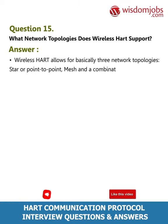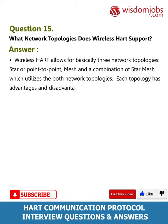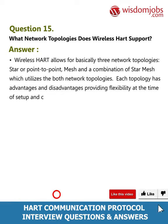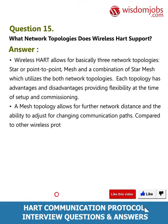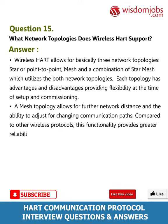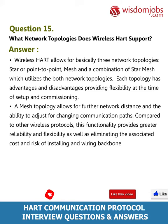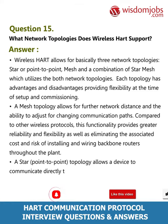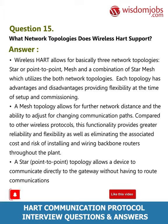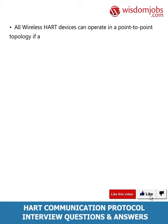Question 15: What network topologies does WirelessHART support? Answer: WirelessHART allows for basically three network topologies: star or point-to-point, mesh, and a combination of star-mesh which utilizes both topologies. Each topology has advantages and disadvantages, providing flexibility at the time of setup and commissioning. A mesh topology allows for further network distance and the ability to adjust for changing communication paths, providing greater reliability and flexibility and eliminating the cost of wiring backbone routers throughout the plant. A star point-to-point topology allows a device to communicate directly to the gateway without routing through another device; all WirelessHART devices can operate in a point-to-point topology if a mesh is not desired.